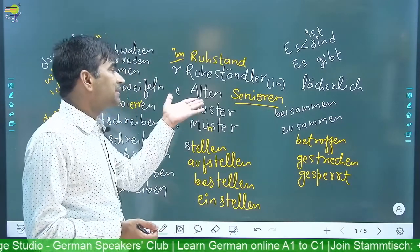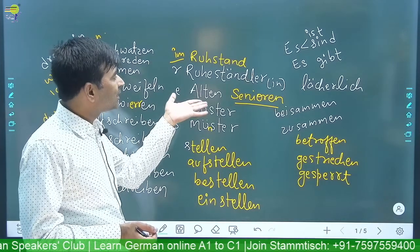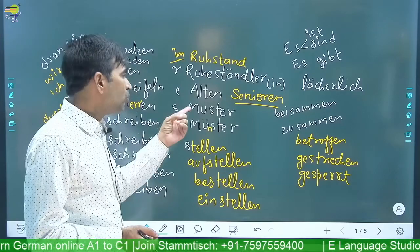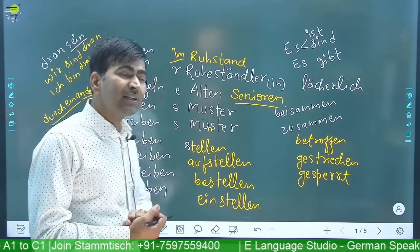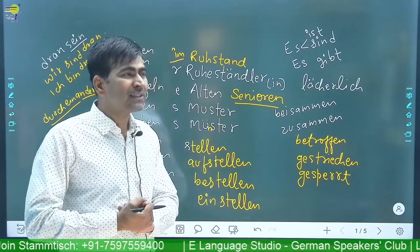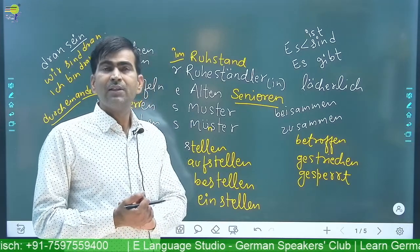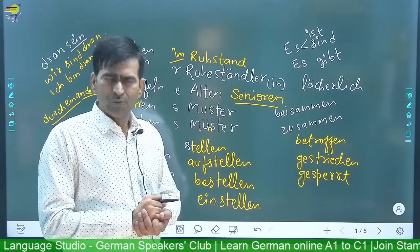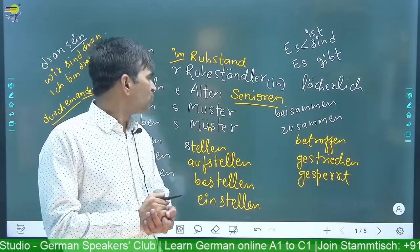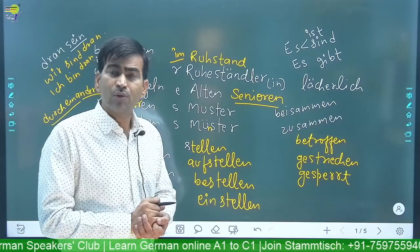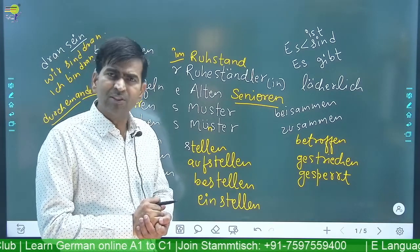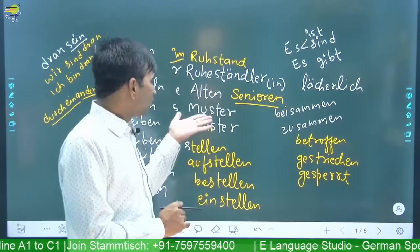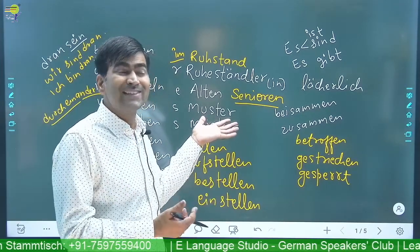Die Alten — old people ke liye kabhi kabhi 'die Alten' bol dete hain. Senioren is also used for the same. Muster — und Musterblatt: Muster means a pattern, you should know about this, maybe for your exam. Musterblätter machen oder üben — Musterblätter. Wir haben noch keine Musterblätter — so Muster ka matlab hai some pattern, you should know, example.